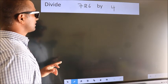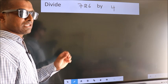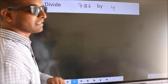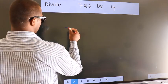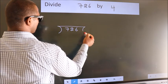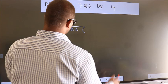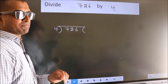Divide 726 by 4. To do this division, we should frame it in this way. 726 here, 4 here. This is your step 1.